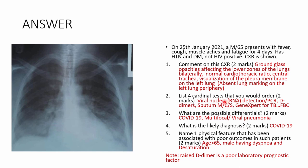Differentials include COVID-19 pneumonia, multifocal pneumonia, viral pneumonia, or TB which should be ruled out. The four cardinal investigations: viral nucleic RNA detection (PCR) for COVID-19; D-dimers (for coagulopathy); sputum for microscopy, culture and sensitivity; and GeneXpert for TB. Do not start with a full blood count — it will be non-specific. Blood cultures may also be ordered. Poor prognostic features include age > 65, dyspnea, desaturation, and a rise in D-dimers.